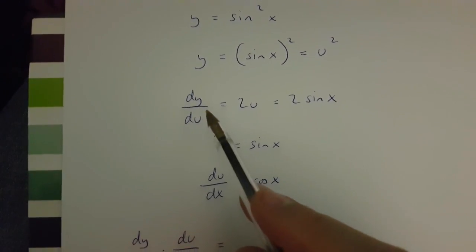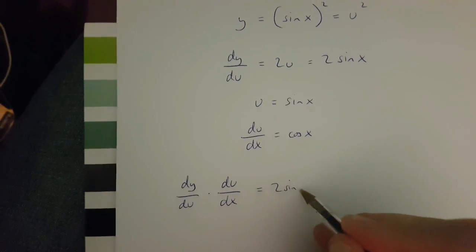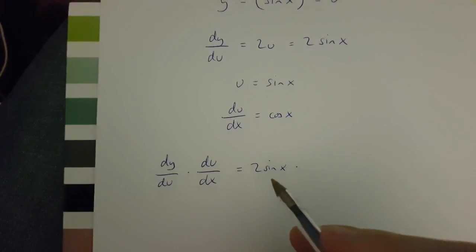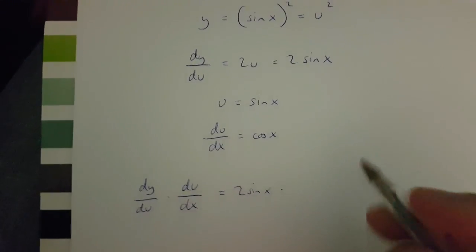Well, dy over du is 2 sin x, and this is going to multiply du over dx, which is cos x.